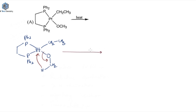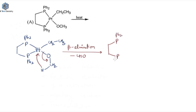So that is called beta elimination. Your CHO group will be eliminated. In the next step you will get a complex with P(Ph2), Pt, CH2CH3 and hydrogen. So after beta elimination you have platinum still coordinated to the ethyl group and a hydride ligand.